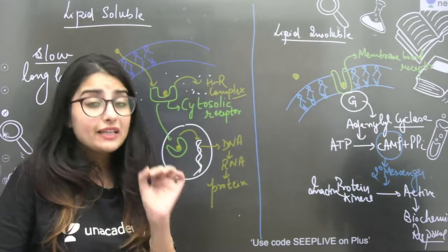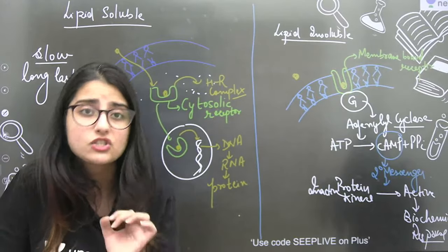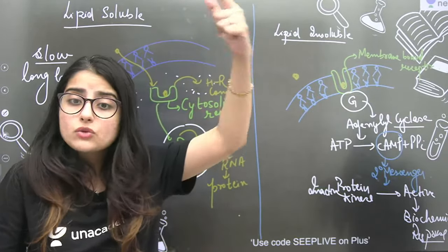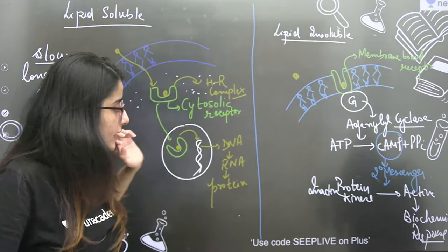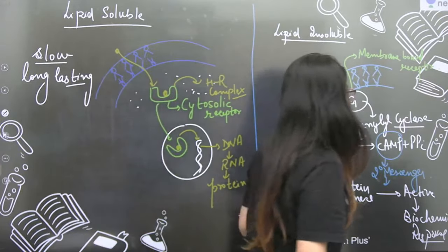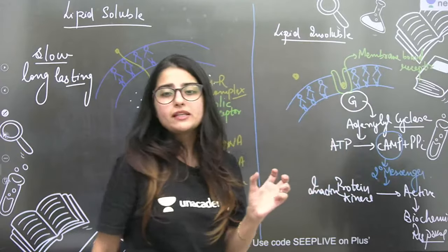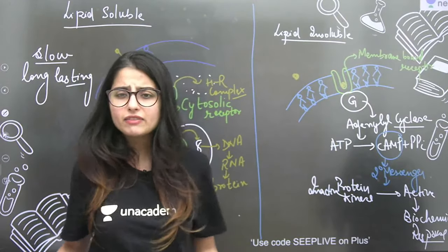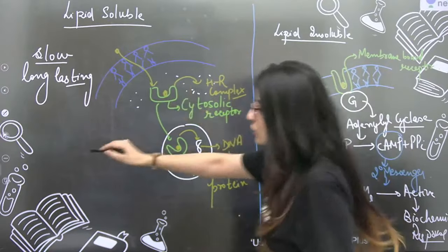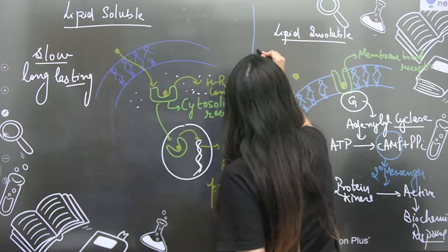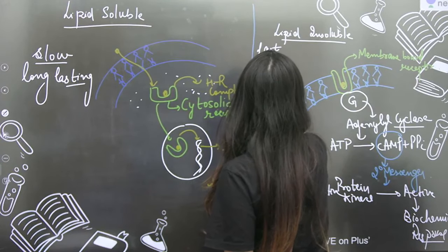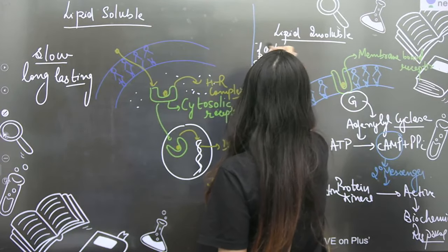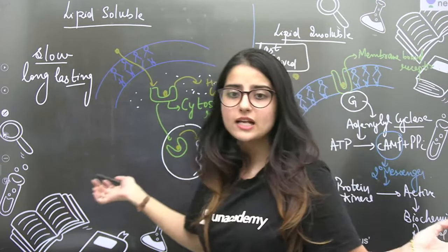So the basic difference is that lipid insoluble is working with secondary messenger. The receptor is present outside. It can't come inside the plasma membrane. This is the process done with secondary messenger. What is this comparatively? It is a fast process. The other was slow. This process is fast but short-lived. Fast and short-lived process. These are both ways.